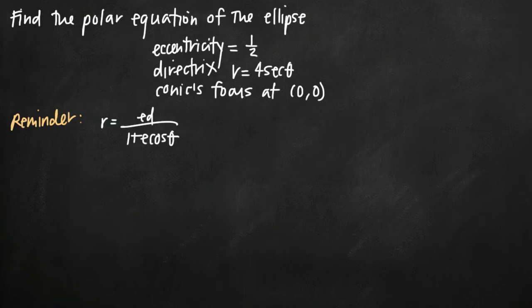Today we're going to talk about how to find the polar equation of an ellipse. In this problem, the eccentricity is 1/2, the directrix is r = 4sec(θ), and the conic's focus is at the origin (0,0).